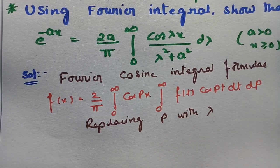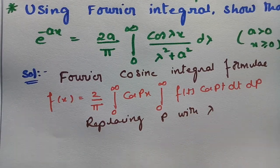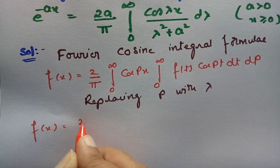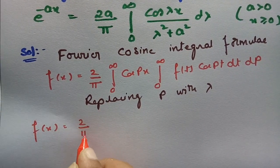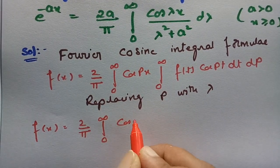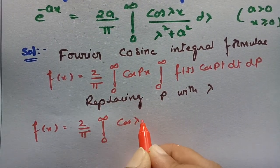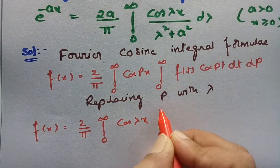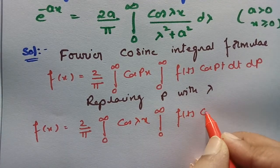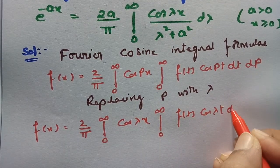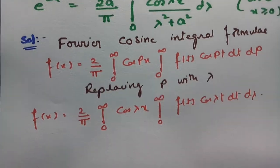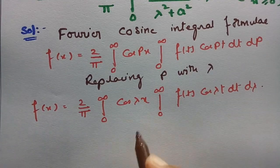In place of p I have to write λ. Then it will become f(x) is equal to (2/π) times the integral from 0 to infinity of cos(λx) times the integral from 0 to infinity of f(t) cos(λt) dt, into dλ. Now, what is our f(x) from the question?